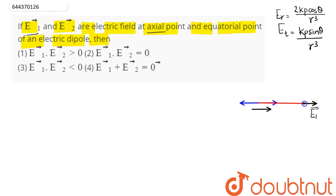At axial point theta is 0, so sin 0 will be 0 and radial component will be 2kp by r cube. So this E1 here is 2kp by r cube.